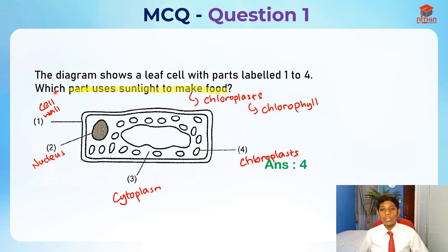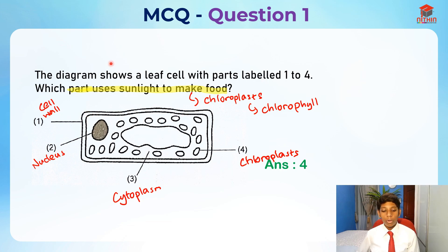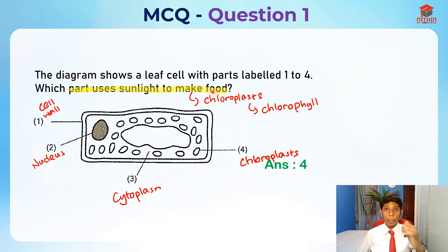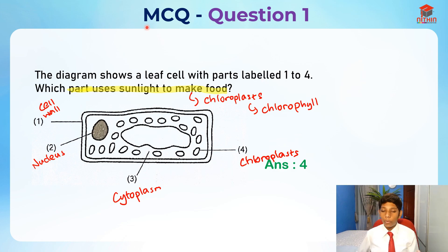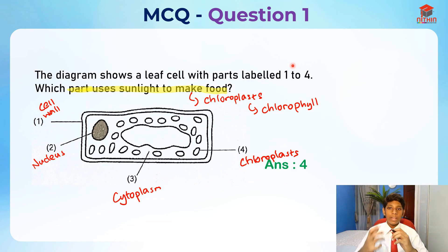I hope you understood how to do this question. This is a very easy question, and the point is just to help you understand the leaf cell — to identify the different parts and their functions. Do remember the parts of the cell and their functions, because not just in MCQ, they can test you in open-ended questions. For open-ended questions, you can't just answer that the chloroplast helps the plant make food using sunlight — that's actually a wrong answer. You need to give a very detailed explanation.